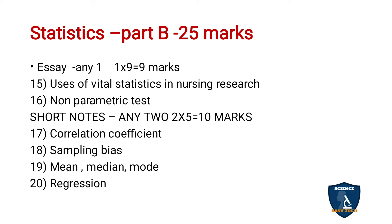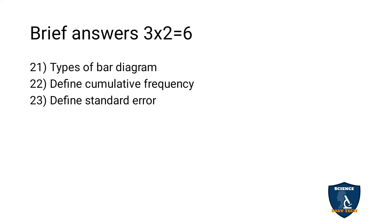Next, Short Notes — out of 4 questions you have to answer any 2, 2 into 5 is equal to 10 marks. The 17th question is Correlation Coefficient, 18th question Sampling Bias, 19th question Mean, Median and Mode, and 20th question Regression. For Brief Answers, there is no choice — you have to answer all 3 questions, 3 into 2 is equal to 6 marks.